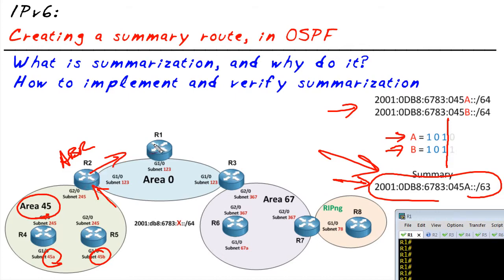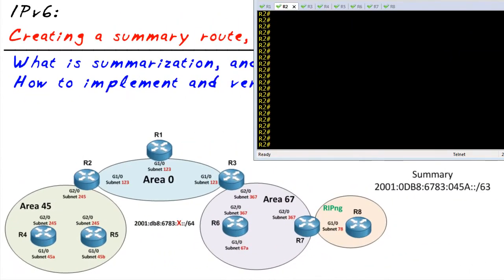Then R1 would have one less route to keep track of. He has one summary route that's referring to both of these more detailed networks. So on R2, who has to do the heavy lifting here, because all the configuration for the summary is on R2 for those two networks...